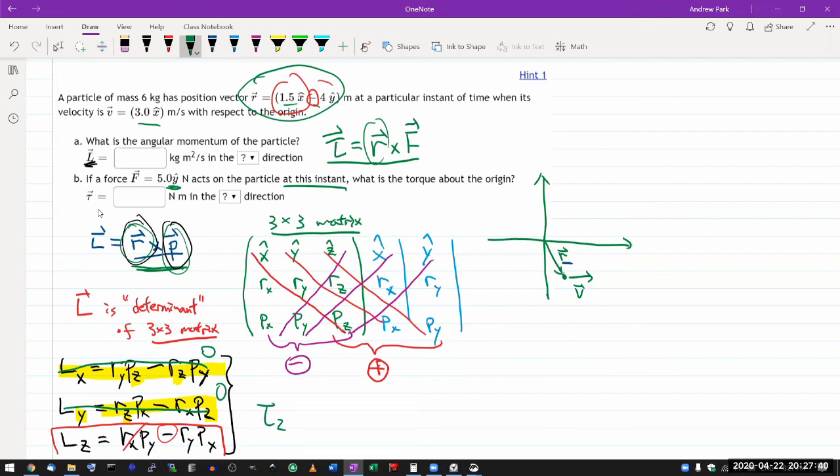When you do R cross F, these are still going to be zero because of the non-existent z component. And when you get to the z component here, the z component of torque, it's going to be Rx Fy minus Ry Fx.